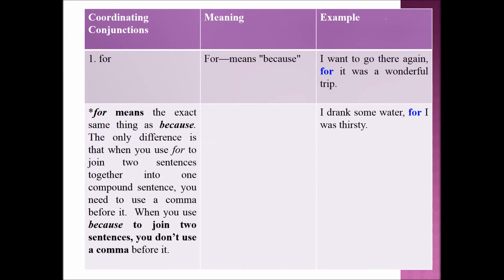FOR means the exact same thing as BECAUSE. The only difference is that when you use FOR to join two sentences into one compound sentence, you need to use a comma before it. When you use BECAUSE to join two sentences, you don't use a comma before it. Example sentence: 'I drank some water, for I was thirsty.'